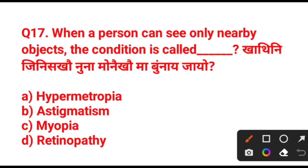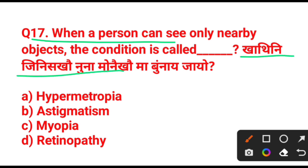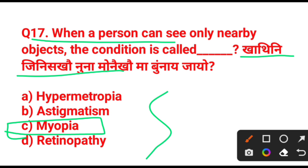When a person can see only nearby objects, the condition is called — so the person can see close objects but not far objects. Option C — myopia. Myopia is when a person cannot see distant objects clearly.